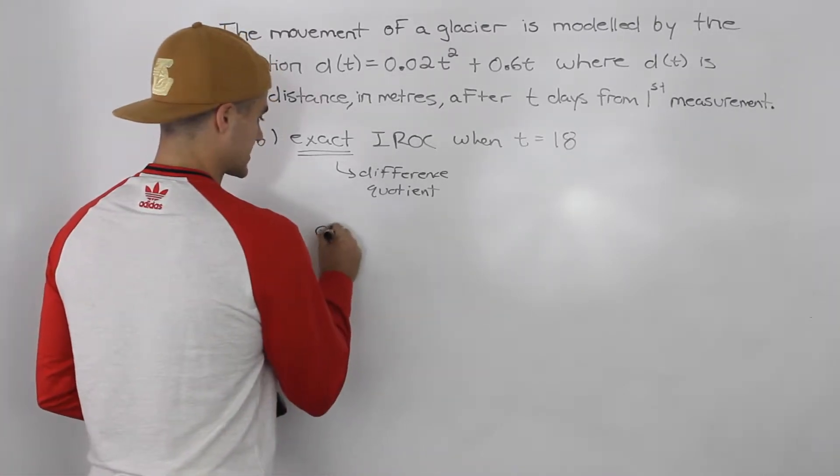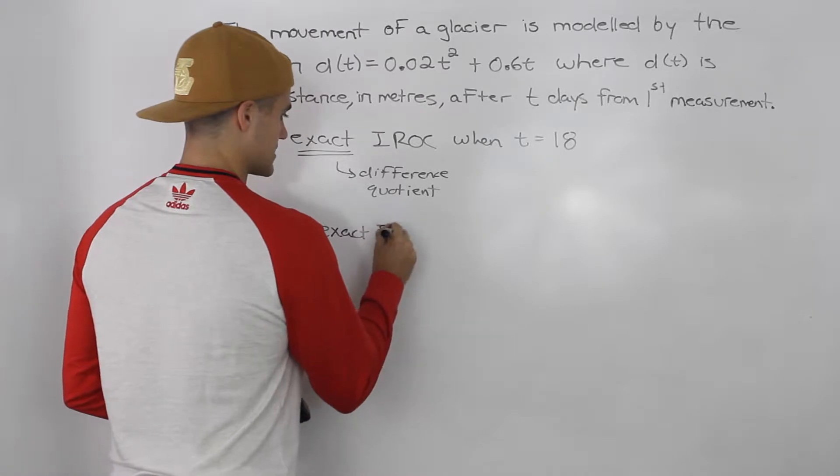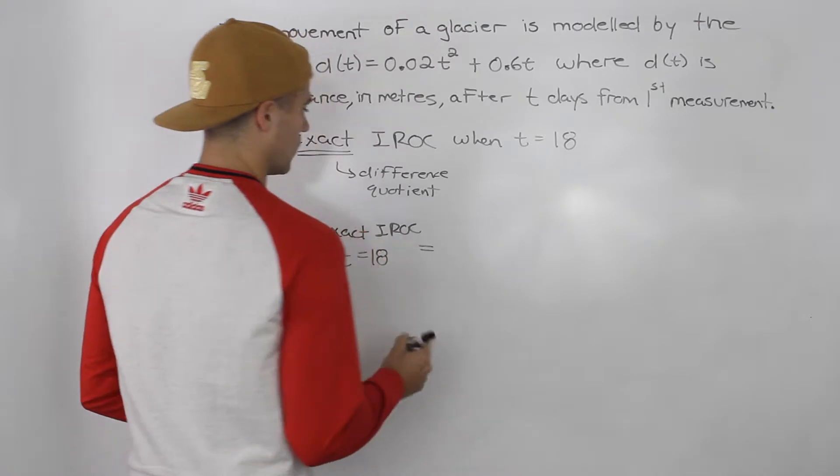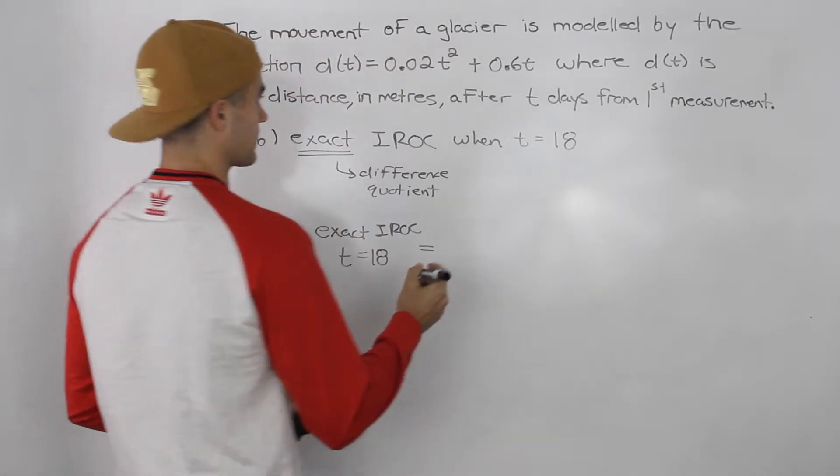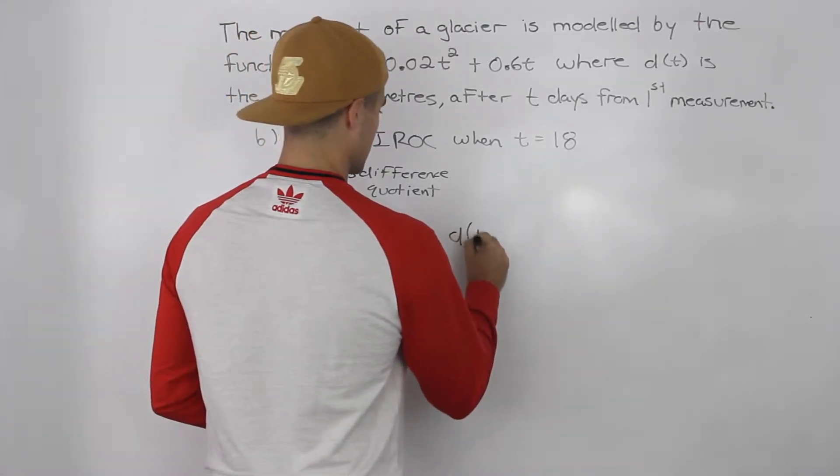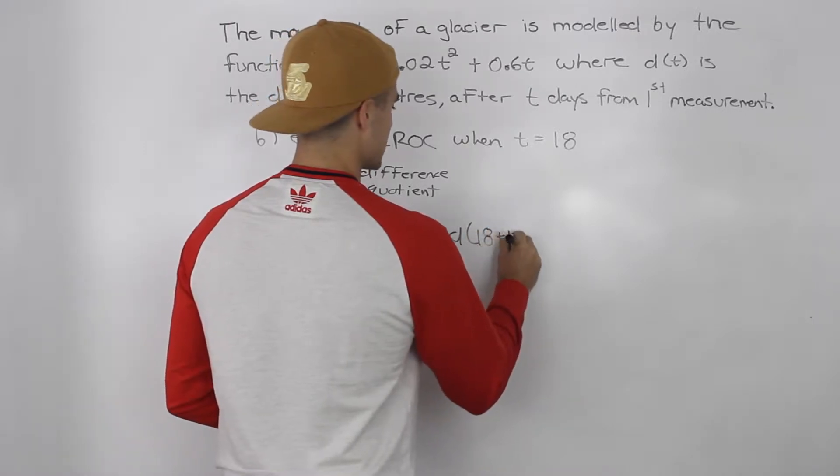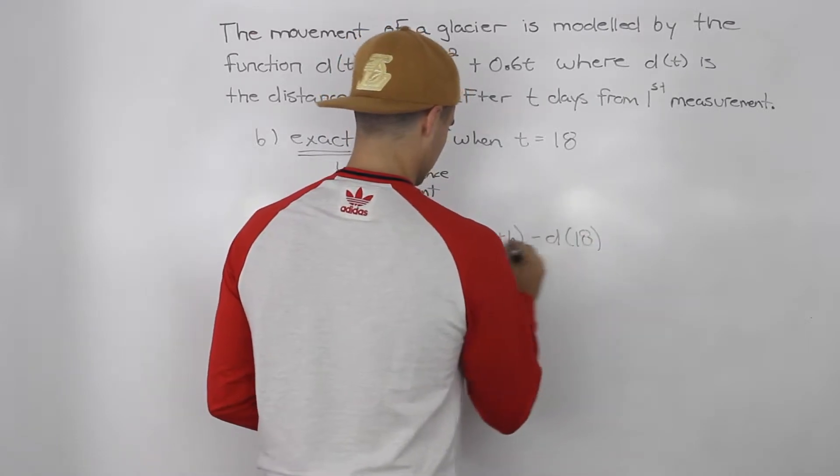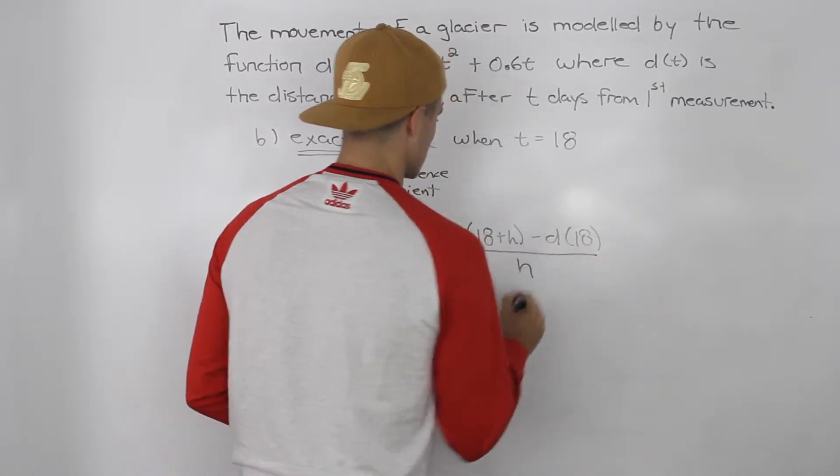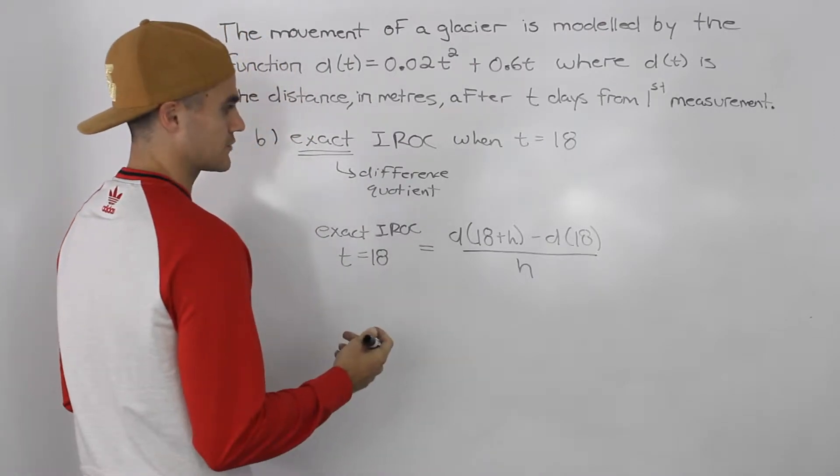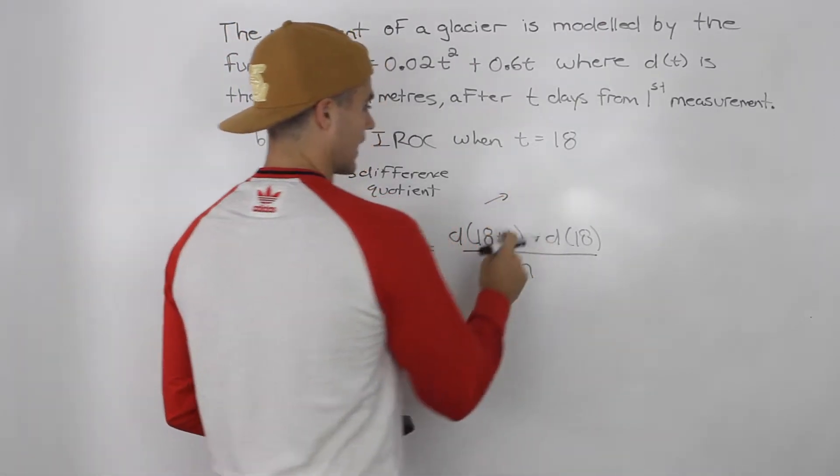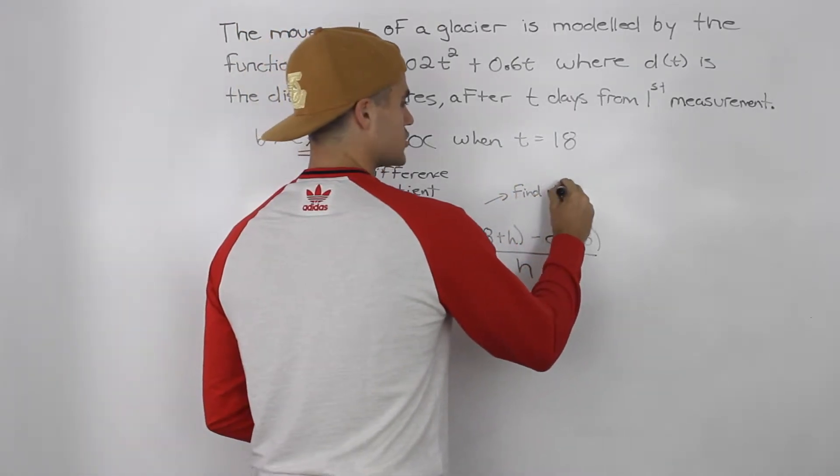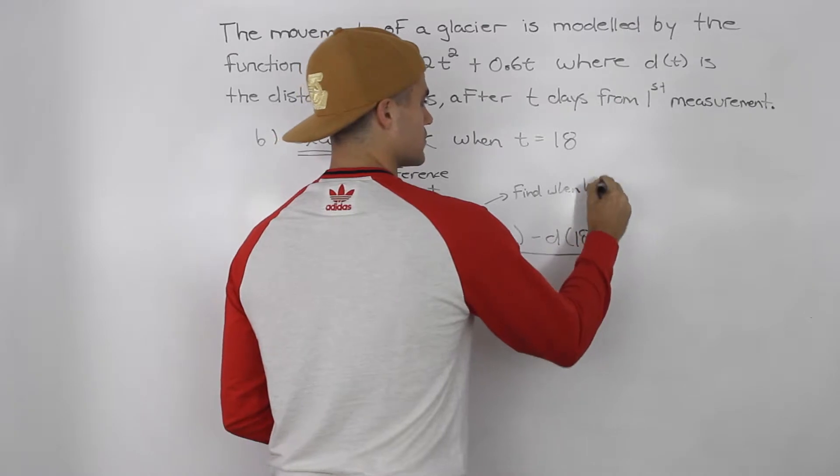So the exact instantaneous rate of change at a t value of 18, what would the formula for that be? Well, it would be d(18+h) minus d(18), all over h. What we're going to have to do at the end is find this approximation when h equals zero.